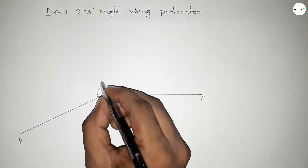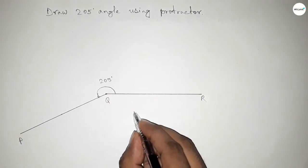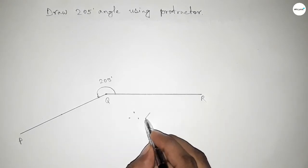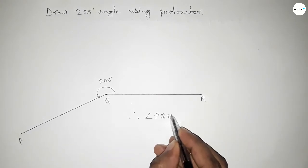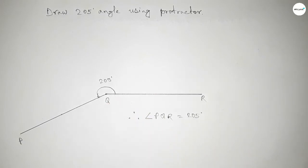This angle is 205 degrees. Therefore, angle PQR equals 205 degrees.